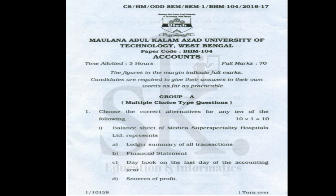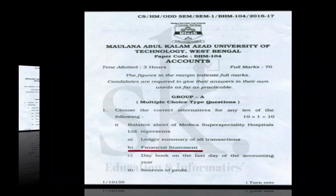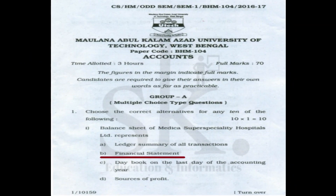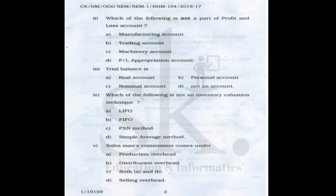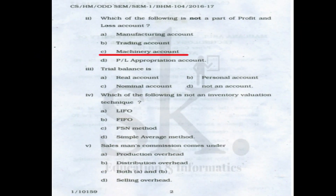Moving to the 2016 question paper: question number one — balance sheet of Medical Super Speciality Hospital Limited represents a financial statement. The correct option is B. Question number two: which of the following is not a part of the profit and loss account — manufacturing, trading, and profit and loss appropriation accounts are part of P&L, but a machinery account is an asset account.